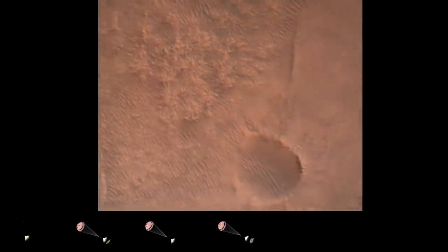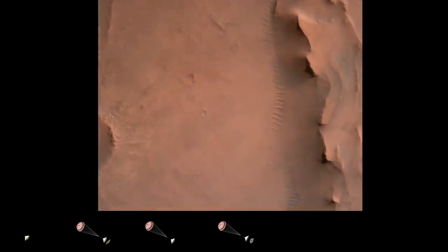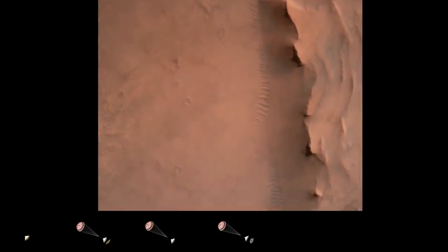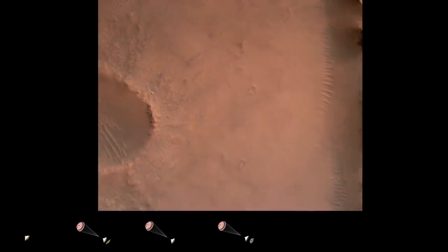Back shell separated. Current velocity is 83 meters per second at about 2.6 kilometers from the surface of Mars. We have confirmation that the back shell has separated.